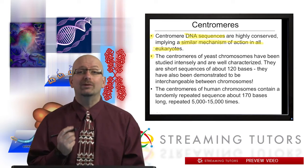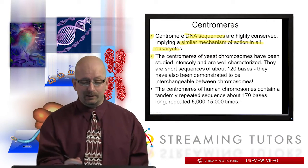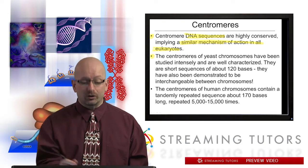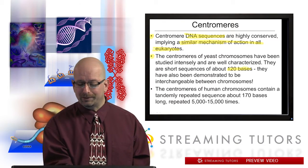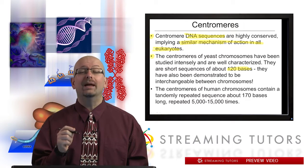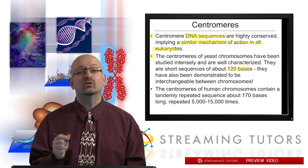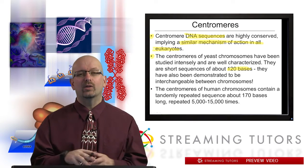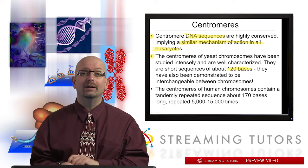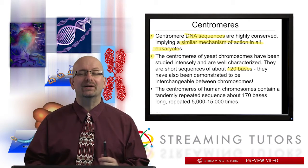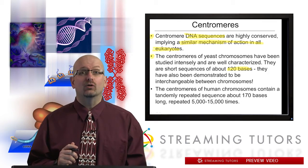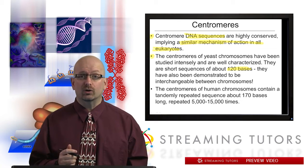Yeast chromosomes have been some of the most widely studied, and we know the most about them. The centromeres of yeast chromosomes are short sequences of just about 120 bases, and they've also been demonstrated to be interchangeable between chromosomes. So in yeast, if you take the centromere from chromosome 1 and replace it on chromosome 2, everything still works just fine.